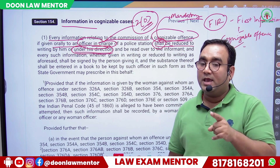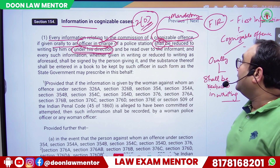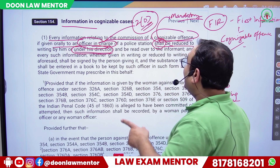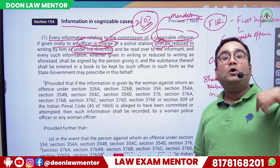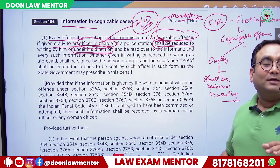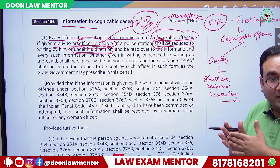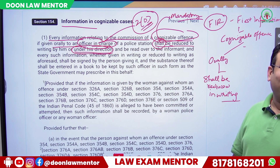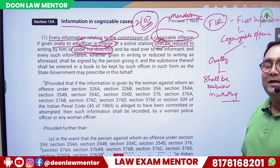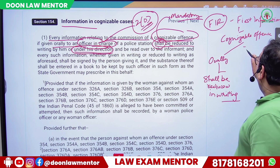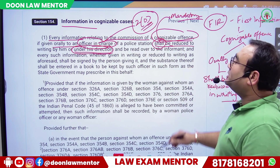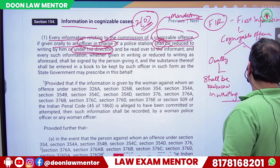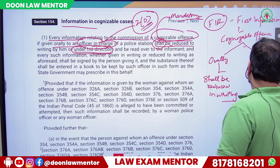From the phrase 'if given orally,' we can also analyze that the information may also be given directly in written form by the informant. So information can come either orally or in written form already.